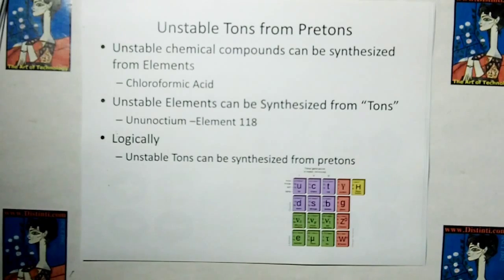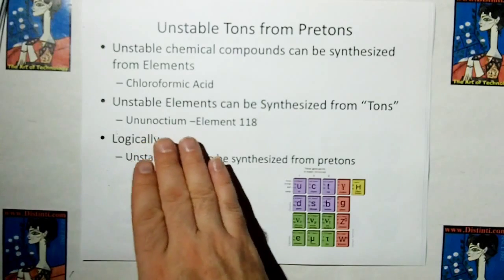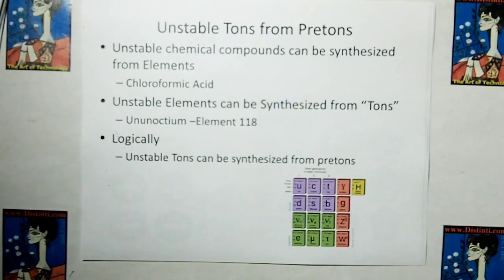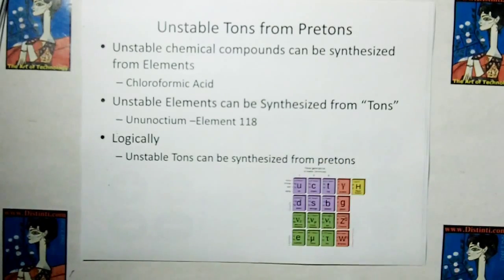And a little side note: unstable tons from pretons. If unstable chemical compounds can be synthesized from elements, like chloroformic acid, and unstable elements can be synthesized from tons, like oganesson, which is element 118, then logically there should be unstable tons synthesized from pretons, and that's what some of these guys are.